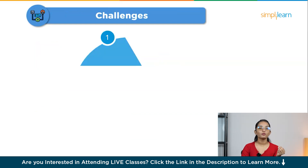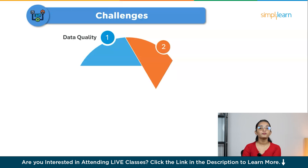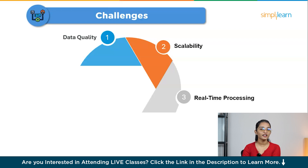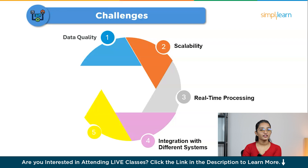Let's look at some common challenges businesses face when implementing ETL. First, Data Quality — ensuring that data collected from different sources is clean, accurate, and consistent is difficult, and bad data can lead to wrong decisions. Then there's Scalability — as businesses grow and collect more data, managing larger amounts without slowing things down becomes tough. Real-time processing is another challenge, as many ETL systems work in batches but businesses often need data processed instantly. Integration with different systems — getting data from many platforms like databases, apps, or files to work together can cause compatibility issues. Error handling — when something goes wrong, like a failed data load, detecting and fixing errors quickly can be tricky. Finally, Data Security — keeping sensitive information safe during the ETL process and following legal requirements like GDPR can be challenging, especially when using cloud services.